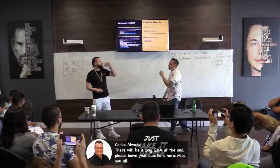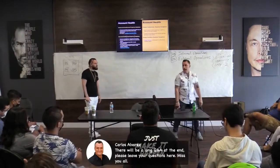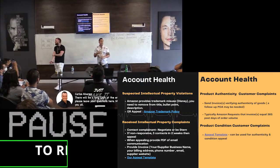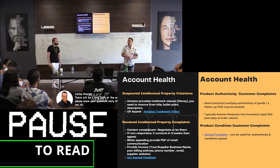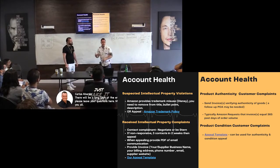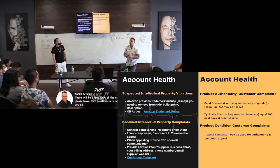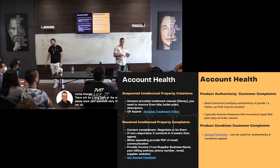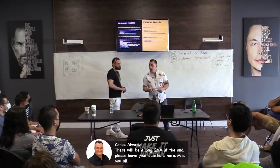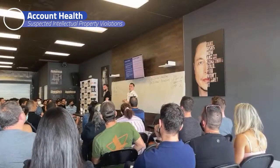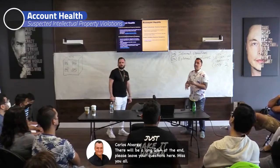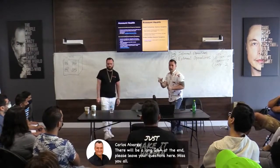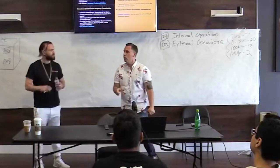Account health is one of my least favorite things to deal with in Amazon, and unfortunately it's not something I could delegate early on — I needed to learn what was happening behind the scenes: why I was getting complaints, violations, terms-of-service issues, and why brands were claiming products were counterfeit or trademarked when they weren't, because proper information wasn't out there and Amazon wasn't providing guidance. The suspected intellectual property violation is actually one of the easier ones to fix under Amazon's trademark policy.